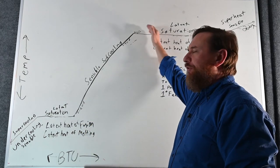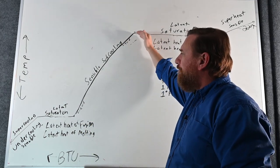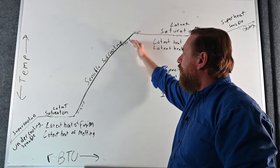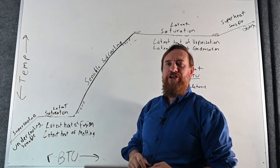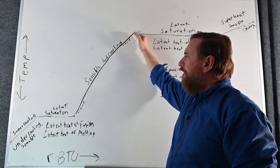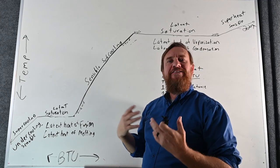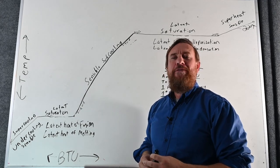Then we have sub-cooling. Once we change it back into a liquid, we can sub-cool it below its saturation point. So below 212°F is a sub-cooled liquid, and that is sensible heat — we can measure that.